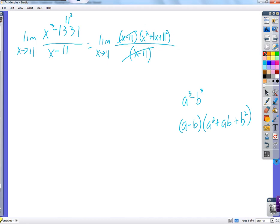So we get 11 squared, which is 121, plus 11 times 11, which is 121, plus 11 squared, which is 121. 363.